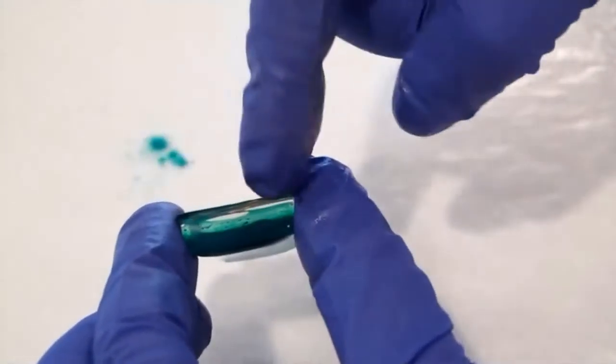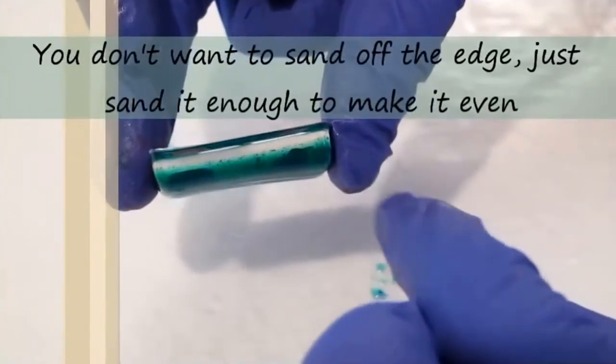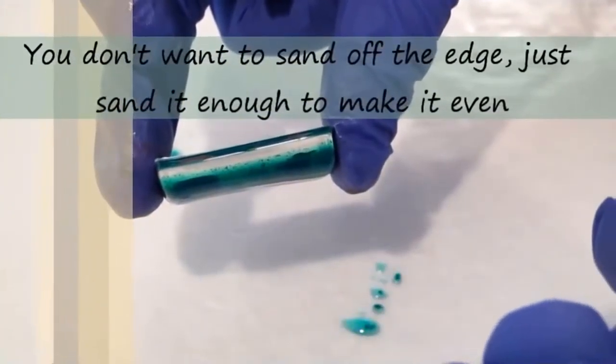what I want you to do is just sand a little bit of it off with a coarse nail file, or you can use some coarse sandpaper, and you'll just kind of go over the edge like that. This edge looks pretty good and pretty even.